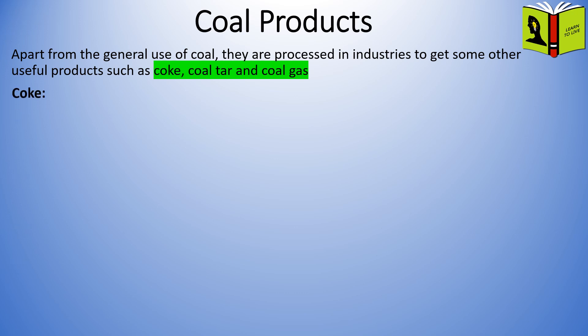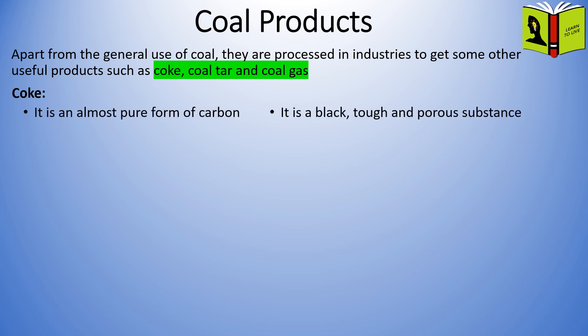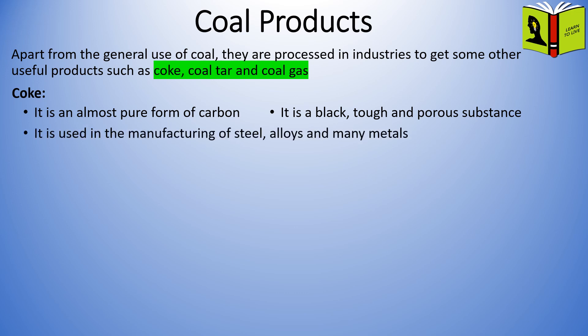Coke: it is an almost pure form of carbon. It is a black, tough, and porous substance. It is used in the manufacturing of steel, alloys, and many metals.